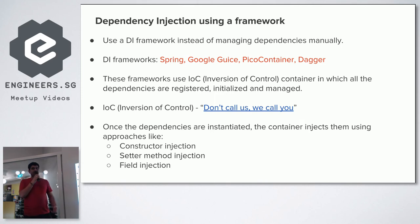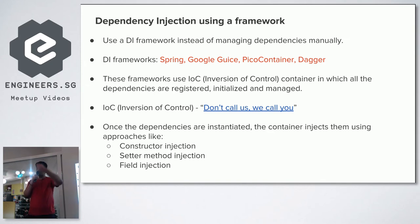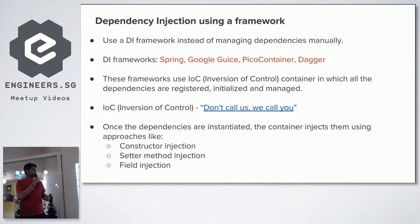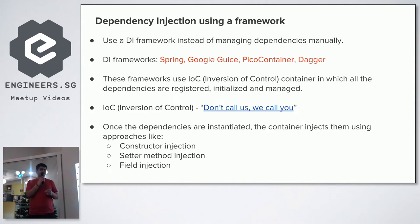The examples so far were manual dependency injection — you created instances of dependency classes and passed them to classes that required them. What if you could tell a third-party framework to handle all of this behind the scenes? This is where dependency injection frameworks come in. In Java, popular DI frameworks include Spring, Google Guice, PicoContainer, and Dagger. These frameworks use an Inversion of Control container in which all dependencies are registered, initialized, and managed.